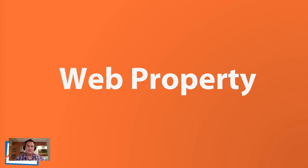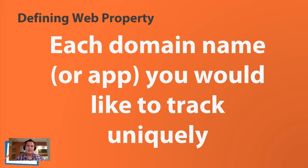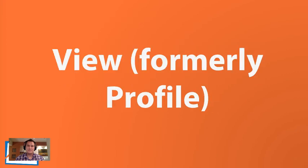Within an account you can have many web properties. A property is basically each domain name or app that you'd like to track uniquely or separately. If you just have one domain name, you really only need one web property. Some people have multiple domain names they want to track separately, or subdomains — those would each be their own unique web property. For most people, you just need one account and one web property to go forward.